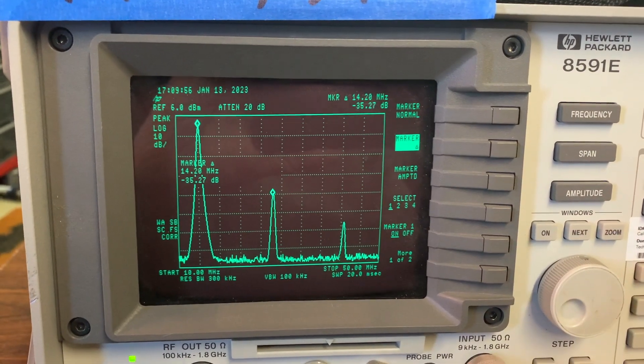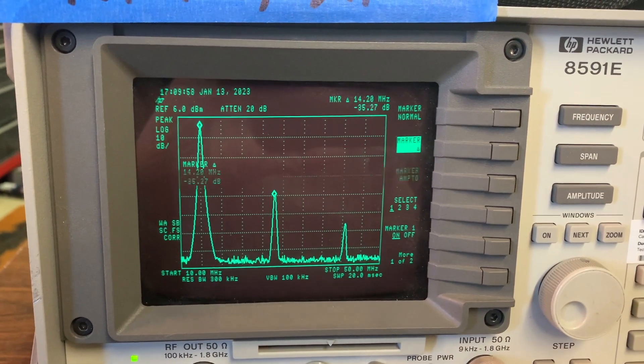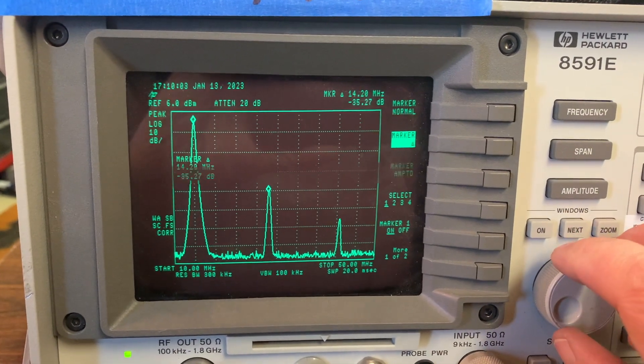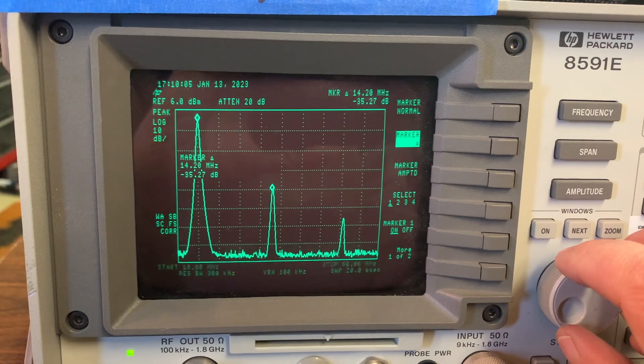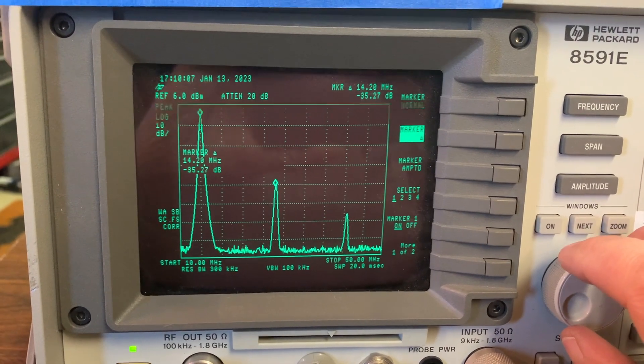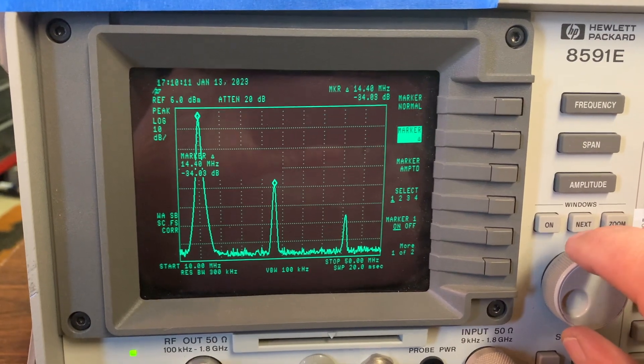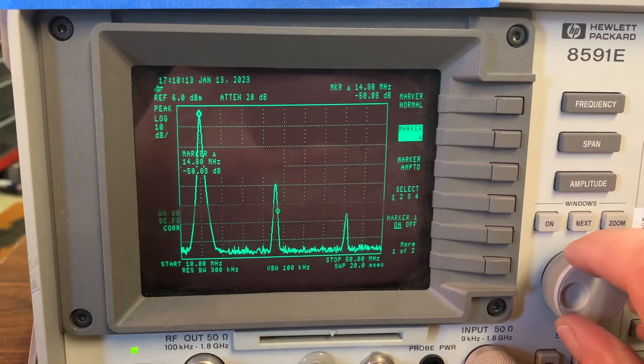And ideally what we'd want this to be is at minus 43. We're at minus 35 dB so it does not meet spec for part 97, so we'll have to build a little low-pass filter in order to be able to knock down that second harmonic level.